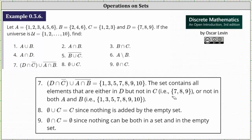Number seven is probably the most involved problem. We have the union of (D intersect C complement) and the complement of (A intersect B). First, D intersect C complement is the set containing elements in D and not in C. Since all elements of D (which are 7, 8, 9) are not in C, D intersect C complement is {7, 8, 9}. The complement of A intersect B — since A intersect B is {2, 4, 6} — is the set containing 1, 3, 5, 7, 8, 9, 10.